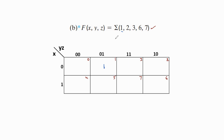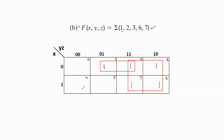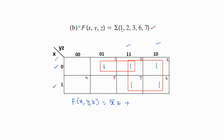Next, the second problem. Place 1s in minterm boxes 1, 2, and 7. Now make groups. These four ones form a quad group. The remaining 1 at position 7 is adjacent to position 3, so they form a pair. For the two-ones group, it lies in the first row and in these two columns, giving x̄. For z, both are 1, so the term is x̄z. For the four-ones group, it lies in both rows and in the middle two columns, so x is eliminated. For y, 1 is common, so y is retained. For z, values are 1 and 0, so z is skipped. Therefore this group gives y. The simplified expression is f(x,y,z) = x̄z + y.